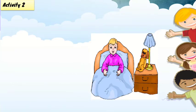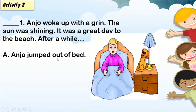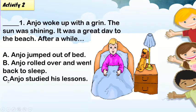Go to activity number two. Read each story. Choose what may likely happen. Write only the letter of your answer. One: Anjo woke up with a grin. The sun was shining. It was a great day to go to the beach. After a while: A. Anjo jumped out of bed. B. Anjo rolled over and went back to sleep. C. Anjo studied his lessons. The answer is number one, letter A: Anjo jumped out of bed.